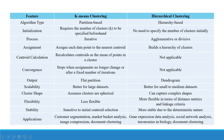Regarding initialization: K-Means requires the number of clusters to be specified beforehand, whereas in hierarchical clustering there is no need to specify the number of clusters initially. The process in K-Means is iterative, while hierarchical clustering is agglomerative or divisive. For assignment, K-Means assigns each data point to the nearest centroid, while hierarchical clustering builds a hierarchy of clusters.